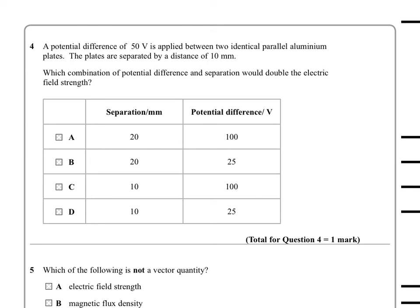Question 4. A potential difference of 50 volts is applied between two identical parallel aluminum plates. The plates are separated by a distance of 10 millimeters. Which combination of potential difference and separation would double the electric field strength? So what you need to do here is find out what the original electric field strength is. So we get electric field with parallel plates like this by doing E equals V over D. So if we do that, we've got 50 over 10.